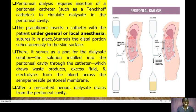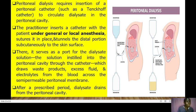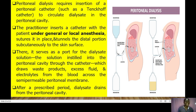The next treatment to discuss is peritoneal dialysis. Peritoneal dialysis requires insertion of a peritoneal catheter — such as the Tenckhoff catheter — to circulate dialysate in the peritoneal cavity. The practitioner inserts the catheter under general or local anesthesia, stitches it in place, and tunnels the distal portion subcutaneously to the skin surface, where it serves as a port for the dialysis solution. The solution instilled into the peritoneal cavity draws waste products, excessive fluids, and electrolytes from the blood across the semipermeable peritoneal membrane.